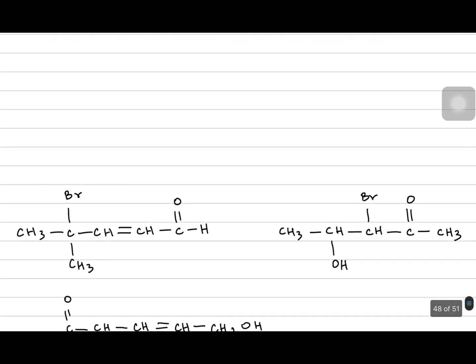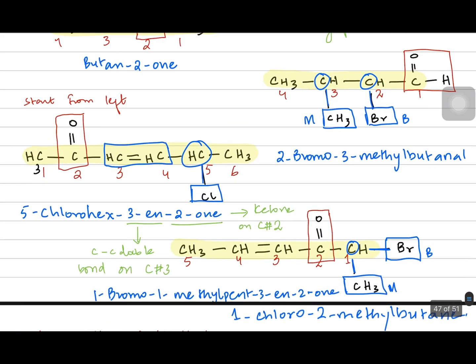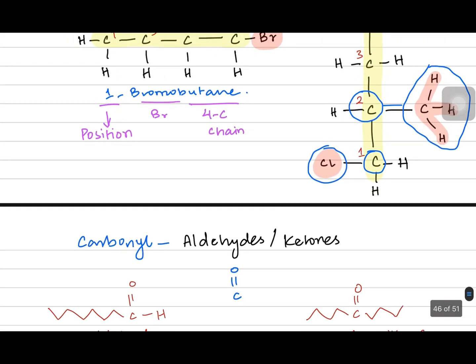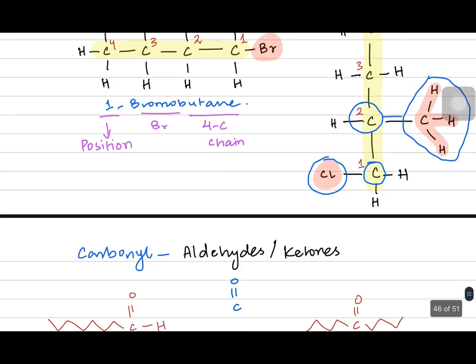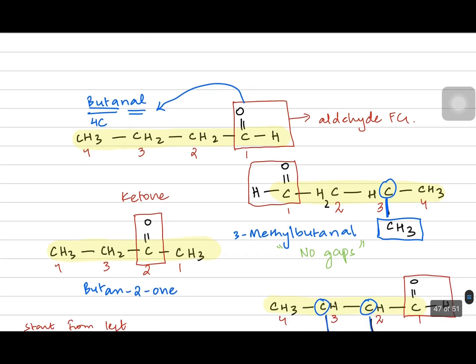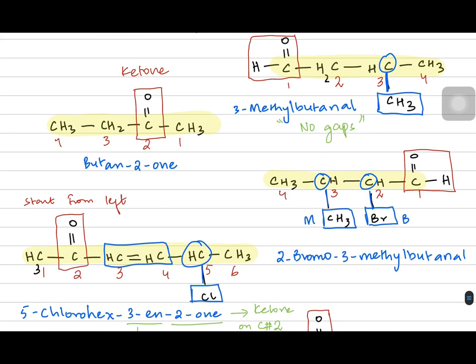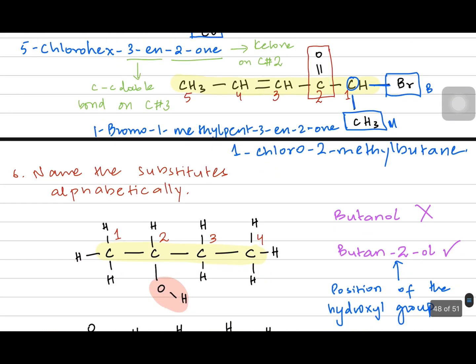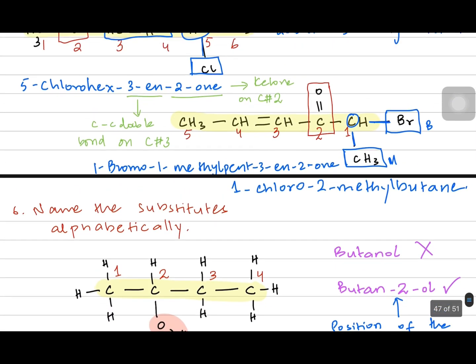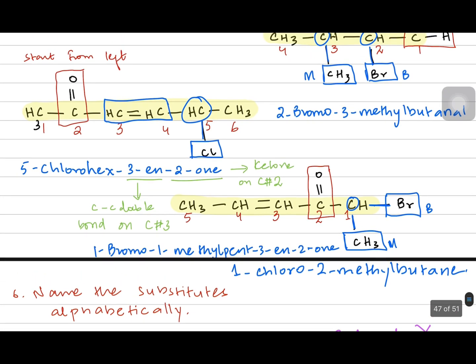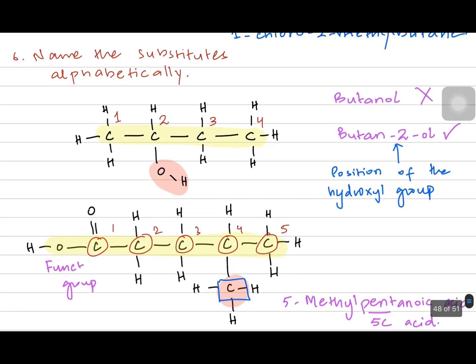Now let's revise what we did today. We covered the naming of aldehyde and ketone functional groups. The name ends with 'AL' for aldehydes and 'ONE' for ketones. We also saw that substituents like bromo, methyl, or chloro must be mentioned before the main chain's name — so chloros, bromos, and methyls are named first.